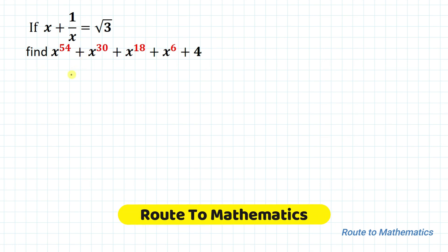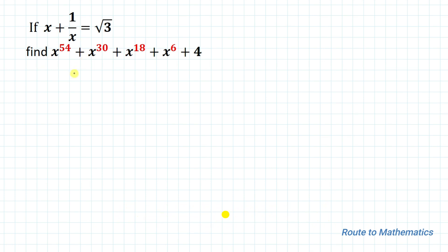Hello everyone, welcome to Root 2 Mathematics. In this video we are going to solve an interesting algebraic question. The given question is: if x plus 1 by x equals to root 3, then find the value of x to the power 54 plus x to the power 30 plus x to the power 18 plus x to the power 6 plus 4.